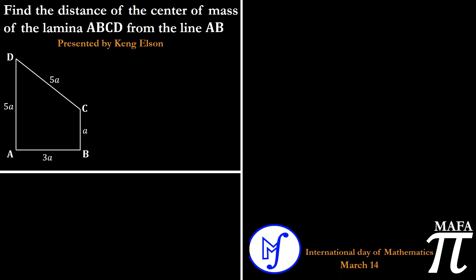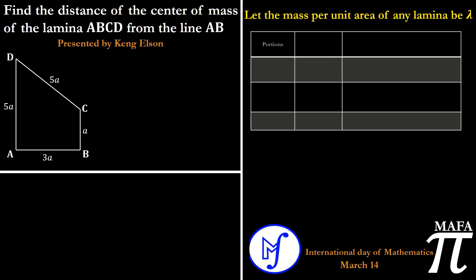The objective is to get the distance of the center of mass of this laminar from the line AB. The very first thing to do is to let the mass per unit area of any sub-laminar be lambda. We are going to construct a table where we take the various portions — the various laminas that exist in our full laminar — find their width, and then find the distance of the center of mass of these portions from line AB.